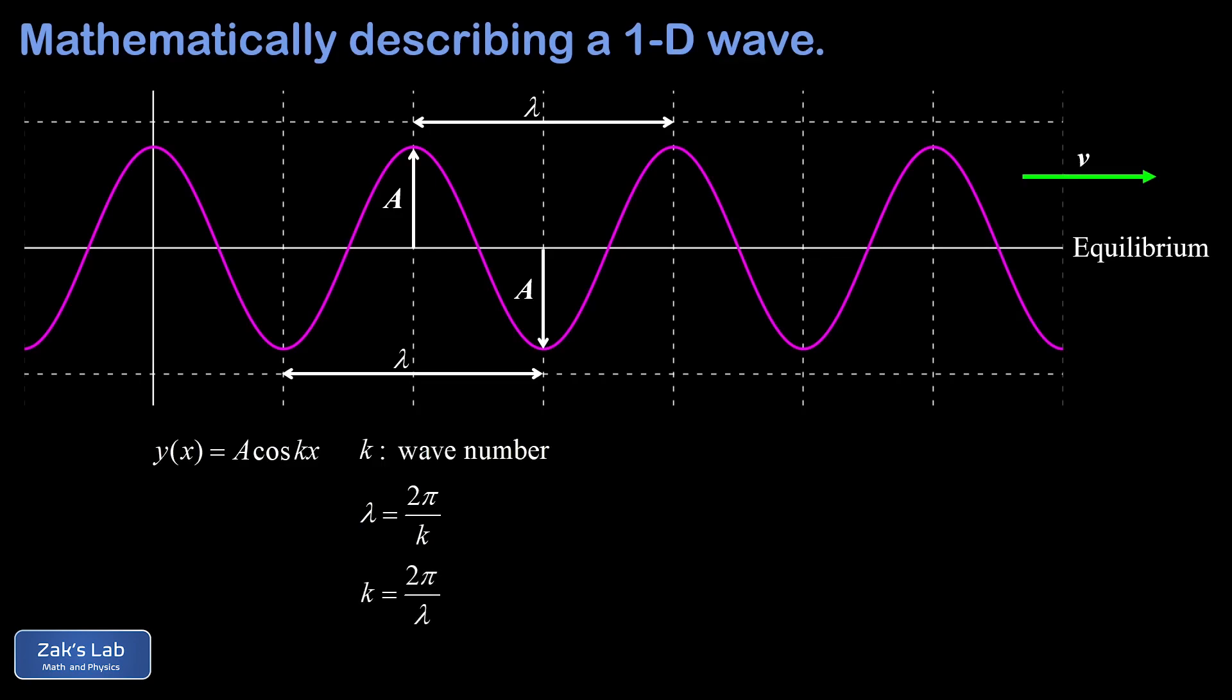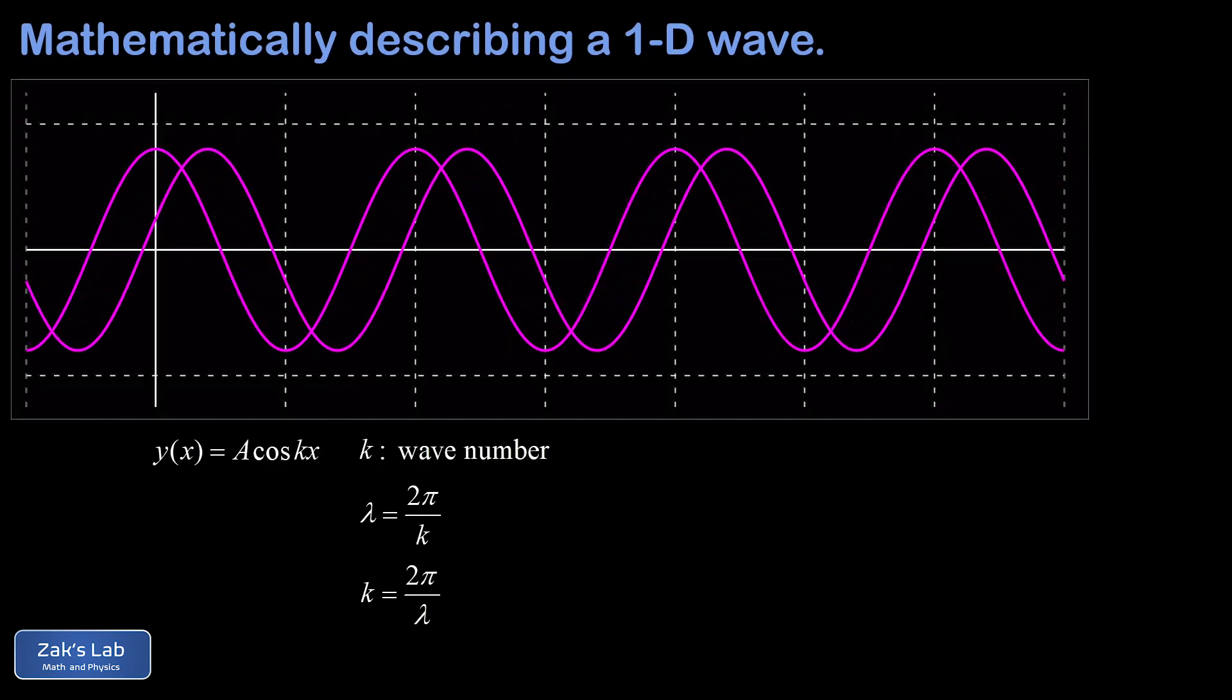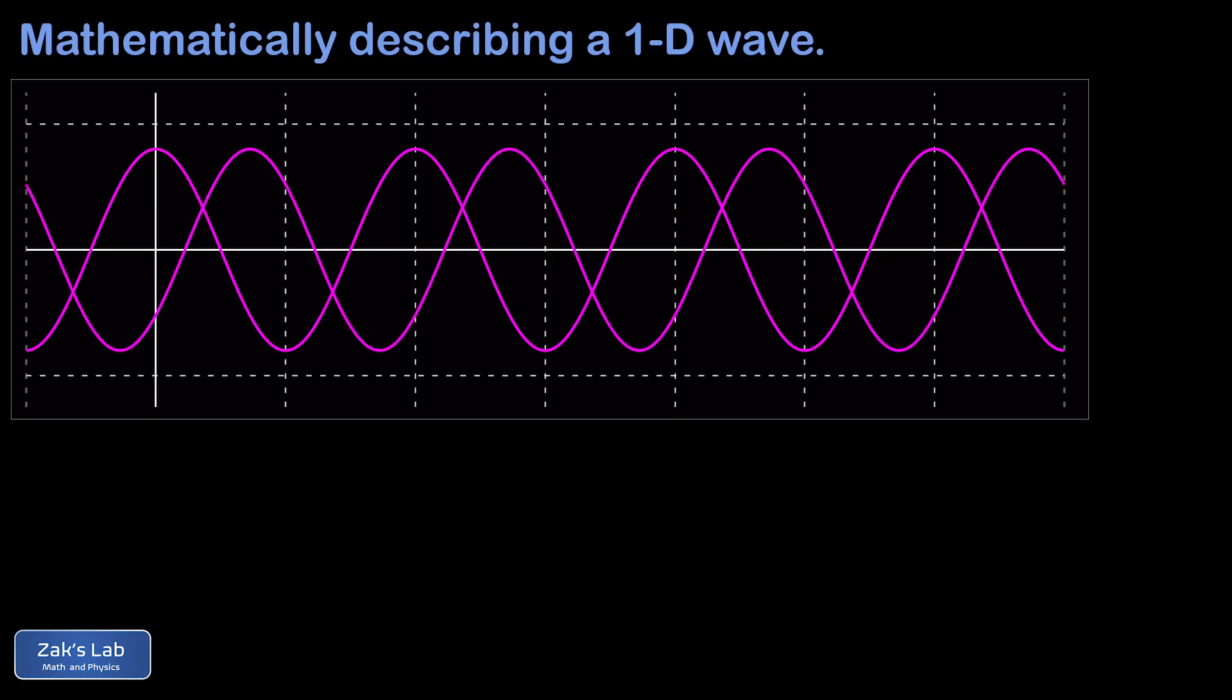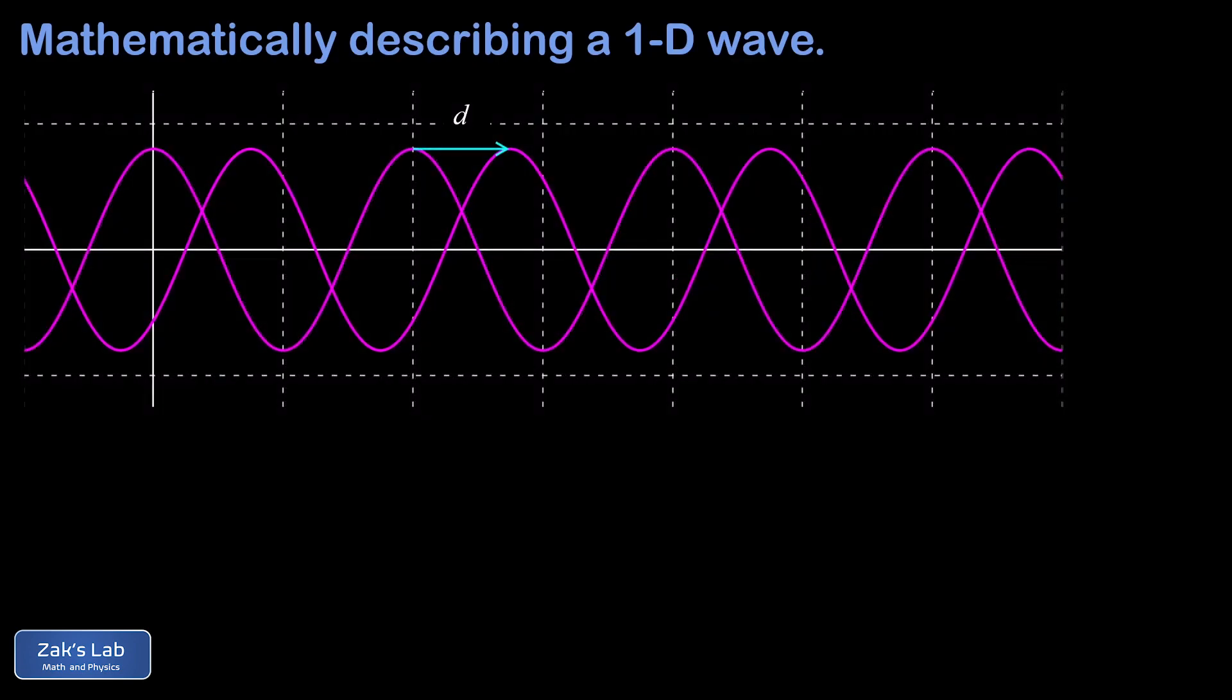Next, we have to figure out how to turn on the rightward velocity of the wave. And this is accomplished through a simple function translation. Remember that replacing x with x minus d causes a rightward shift by a distance of d. So we can say that A cosine of k times the quantity x minus d is shifted to the right by a distance of d. All we did there was replace x with x minus d.